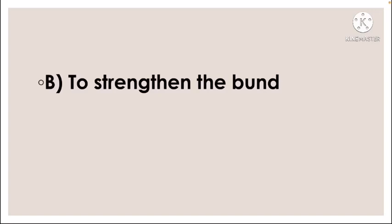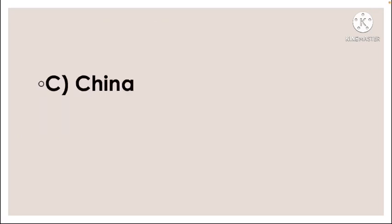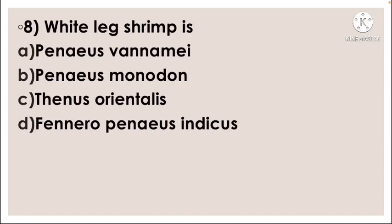Next question: Which nation ranks first in world fish production? — option A USA, option B India, option C China, option D Japan. The correct answer is option C, China.